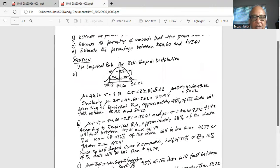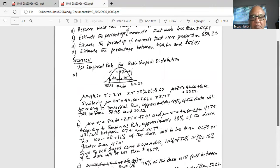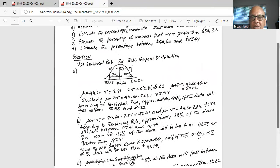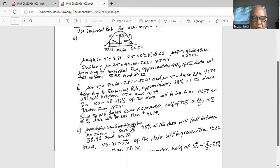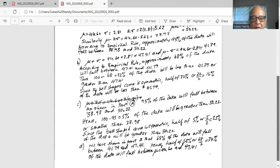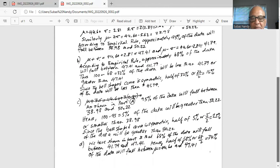In part d, they're asking, estimate the percentage between 44.69 and 47.41. Now we have already shown in part b that 68% of the data will fall between 41.79 and 47.41.